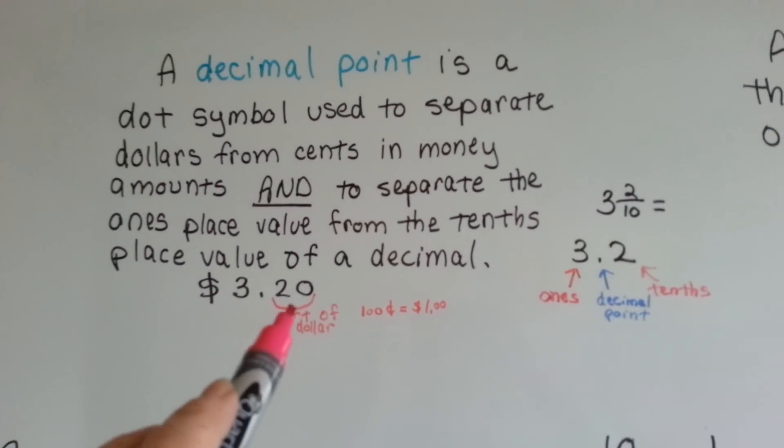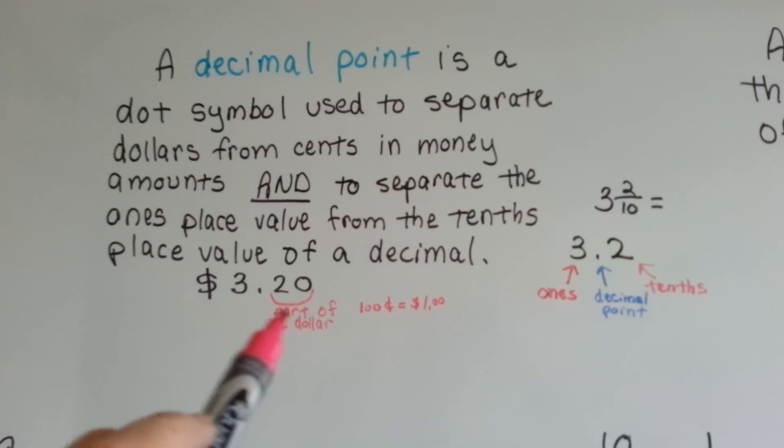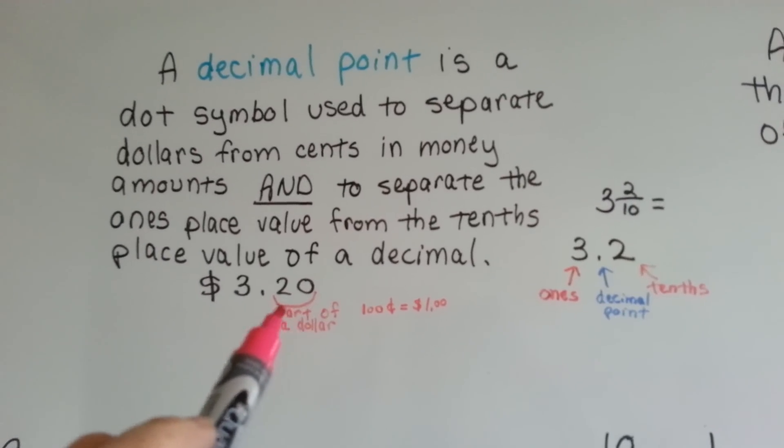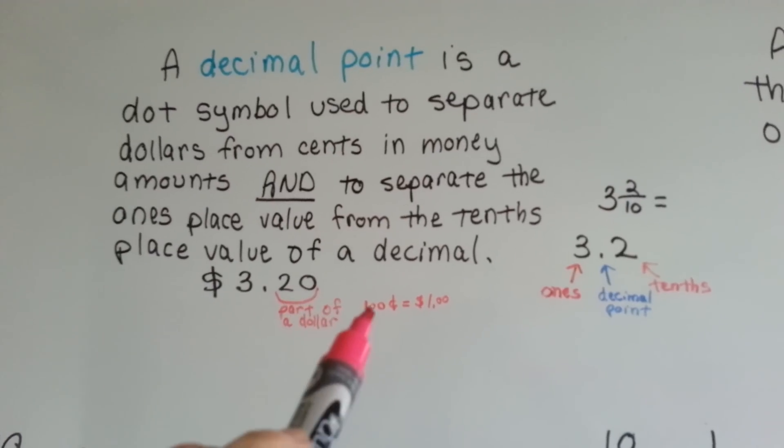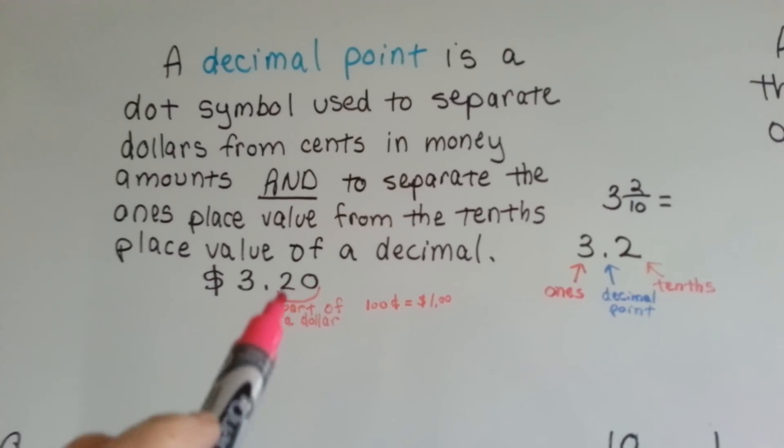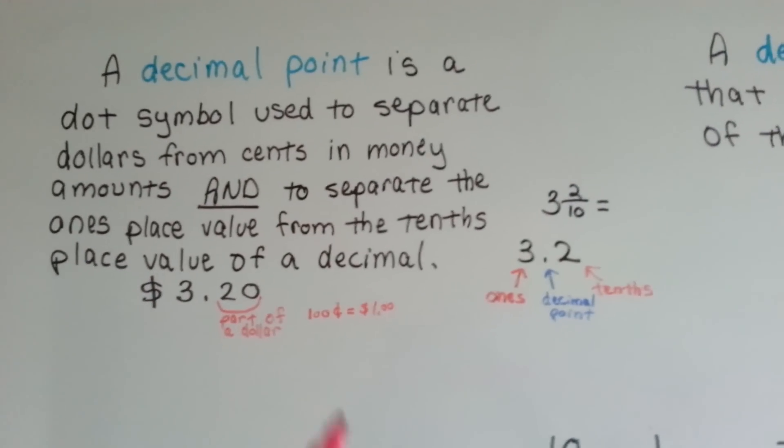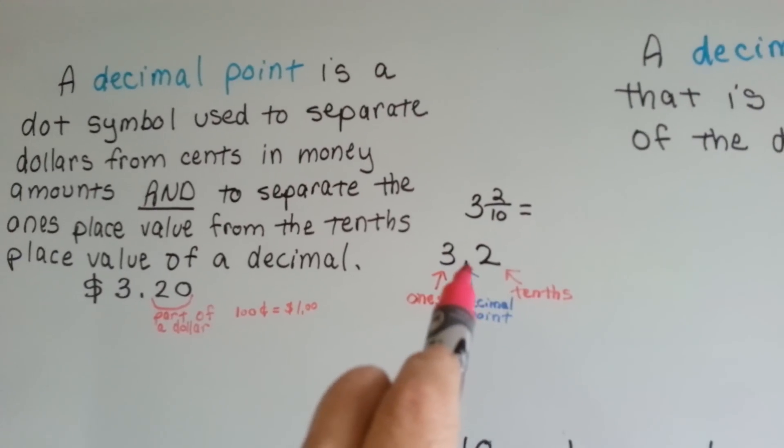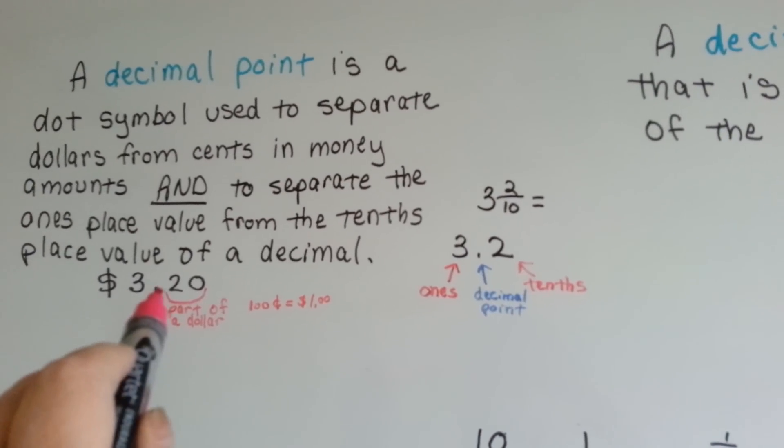Where this is three dollars and twenty cents, we know that that's twenty parts of a dollar, which is one hundred cents. It's twenty parts of one hundred. The decimal point is this dot right here, or right there.